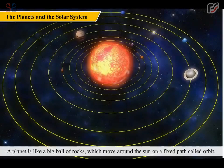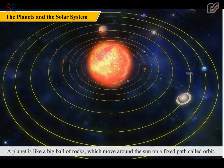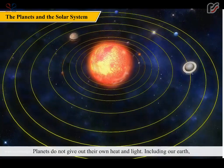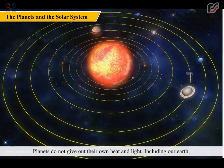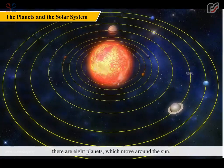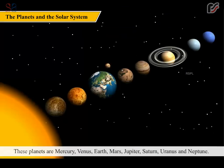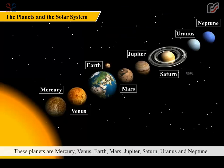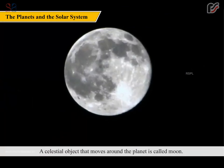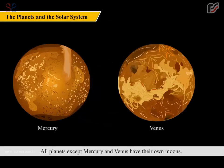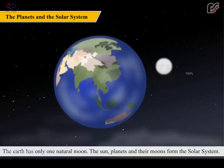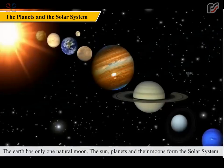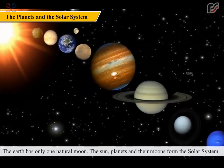A planet is like a big ball of rocks which move around the Sun on a fixed path called an orbit. Planets do not give out their own heat and light. Including our Earth, there are eight planets which move around the Sun: Mercury, Venus, Earth, Mars, Jupiter, Saturn, Uranus and Neptune. A celestial object that moves around the planet is called a Moon. All planets except Mercury and Venus have their own moons. The Earth has only one natural moon. The Sun, planets and their moons form the solar system.